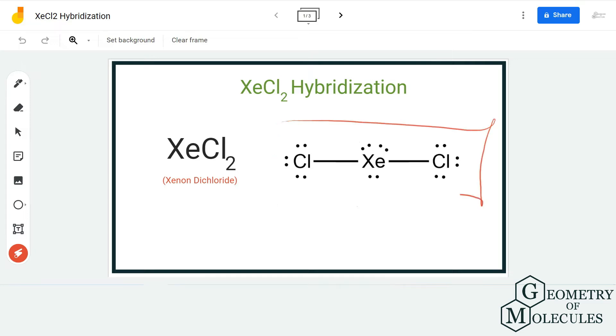Here is the Lewis structure of XeCl2, in which the xenon atom is forming two single bonds with two chlorine atoms. Besides that, there are three lone pairs on the central atom.